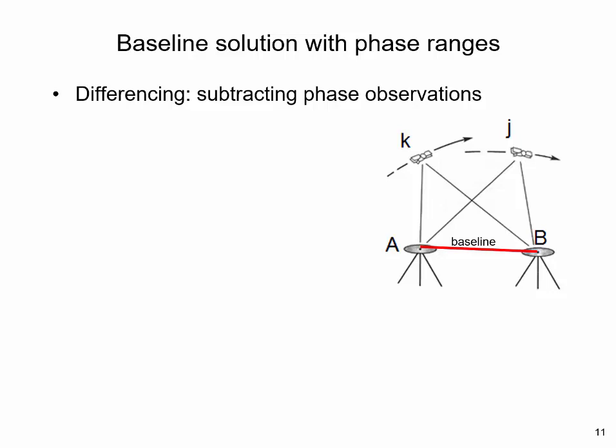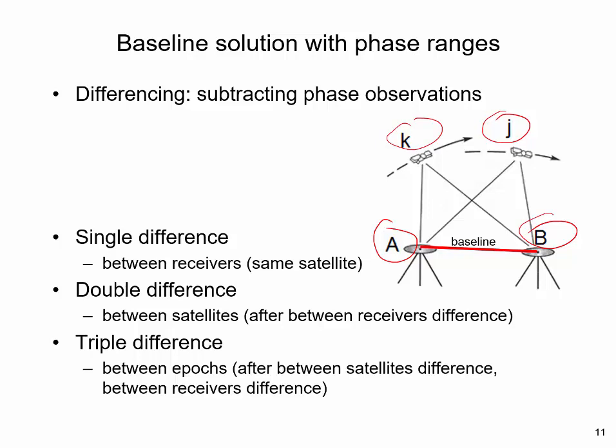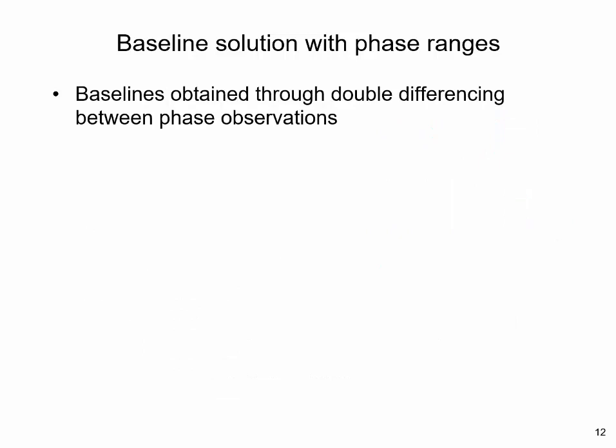Assuming simultaneous observations at two receivers A and B, two satellites K and J, linear combinations of phase equations can be formed. This results in single, double and triple differences. Single differencing is achieved by observing a single satellite simultaneously from two receivers, such as satellite K from point A and B. Double differencing subjects the results of single differences at two receivers, one from another. Triple differencing consists of differencing the results of two double differences for two different times. Triple differencing is a common method to handle signal dropouts.